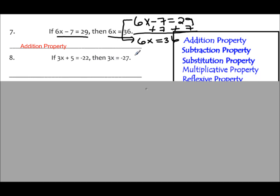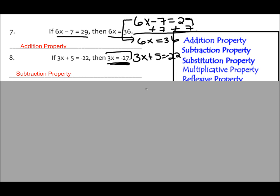Number 8: you can rewrite 3x plus 5 equals negative 22, then determine what your next step would be to solve for x. They've used the subtraction property. The next step would be to subtract 5 from both sides, leaving us with 3x equals negative 27.